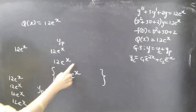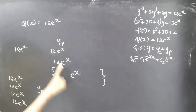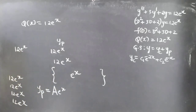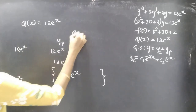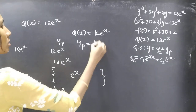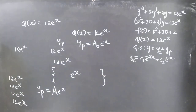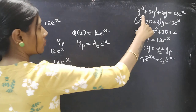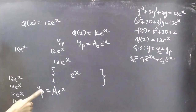Since Q(x) = 12e^x and all its derivatives are also 12e^x, we pick just one term: e^x. So yp = A·e^x, where A is an undetermined coefficient. In general, if Q(x) = k·e^x, then yp = A₀·e^x. Since the given equation also contains y'' and y', we'll find yp' and yp''.